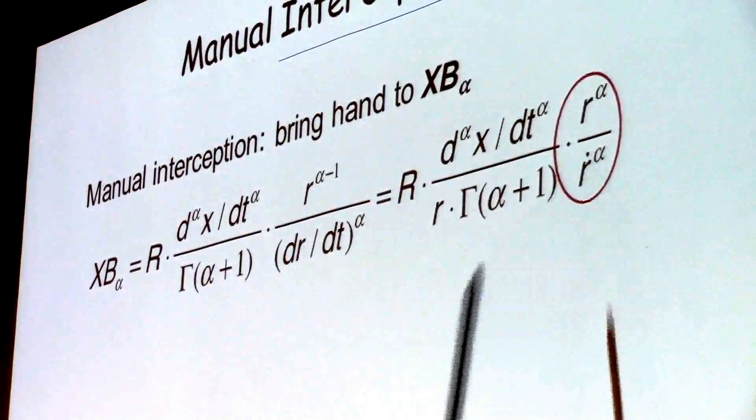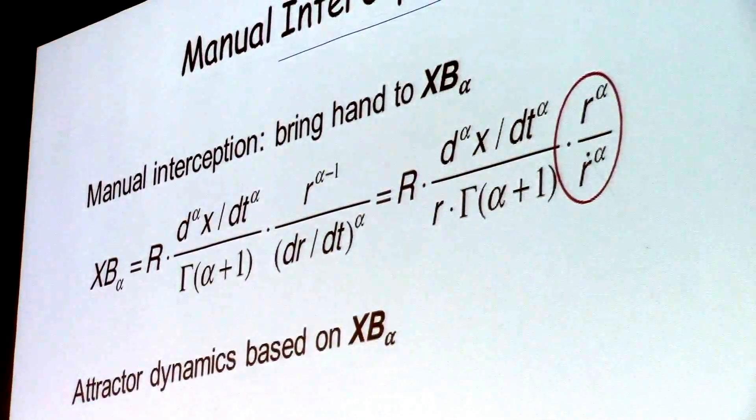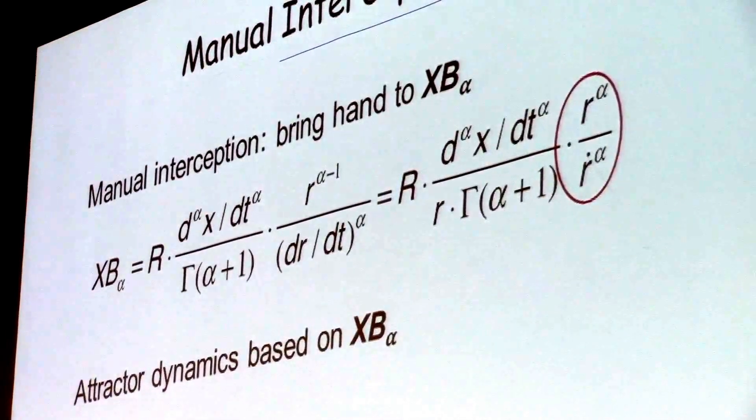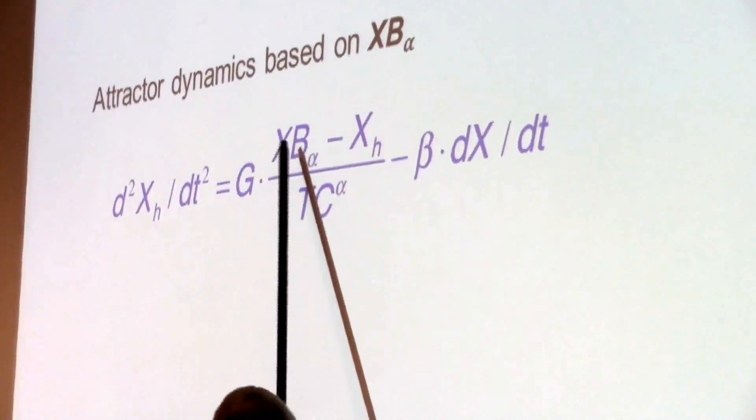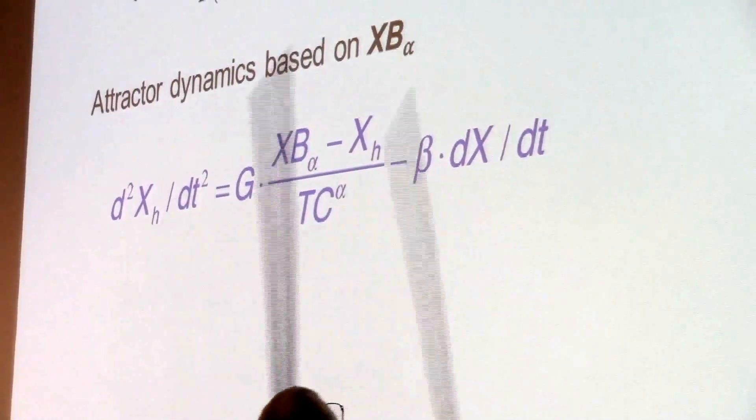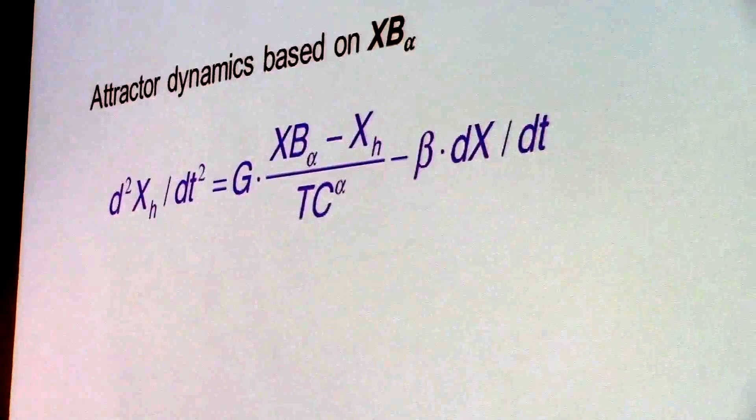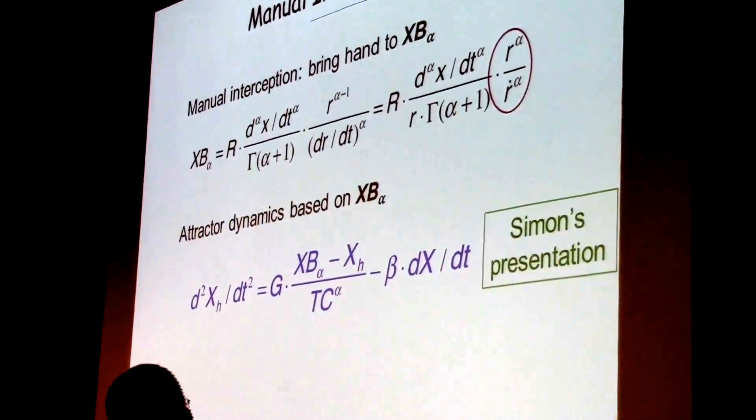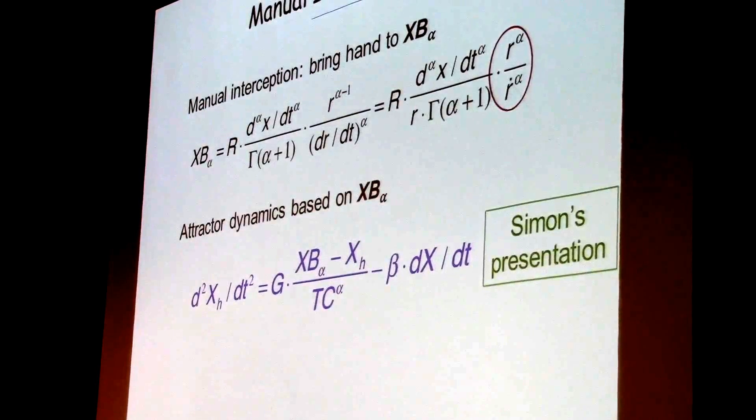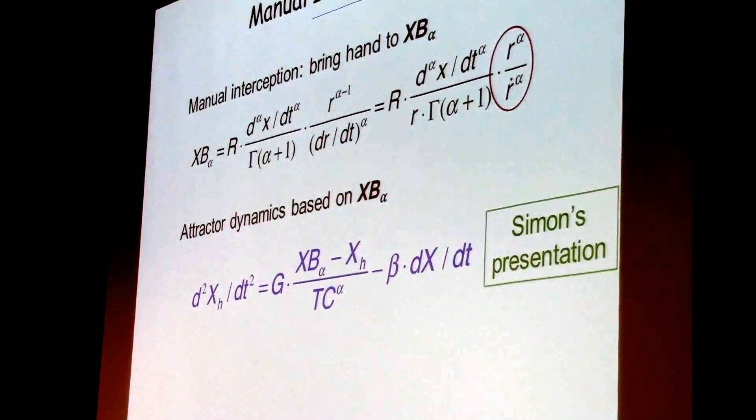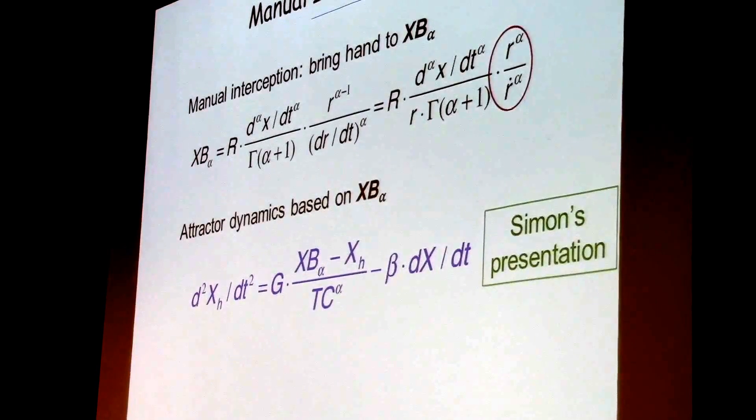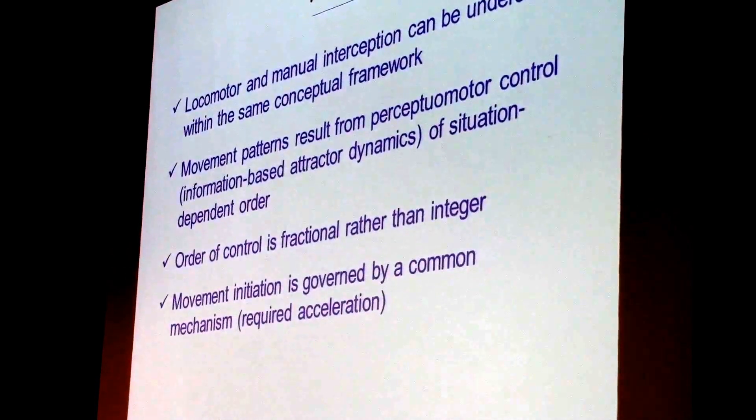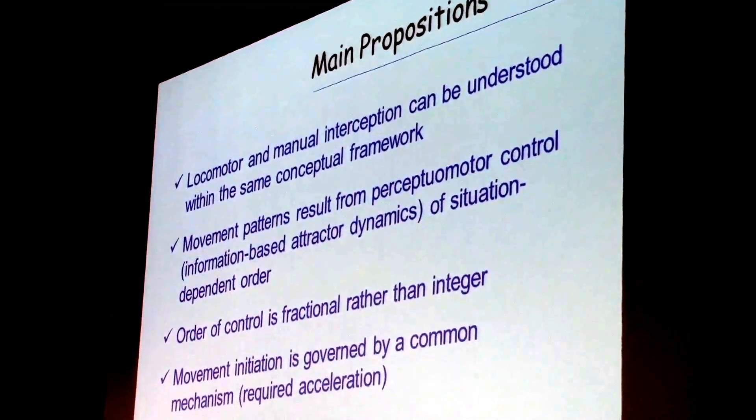Important to keep in mind. Tau to the power alpha. The attractive dynamics that you would have in manual interception based on an XB alpha. We don't know what alpha is, but it could be anything. You are going to have a hand acceleration that is based on a difference between where you want to be and where you are. Which you now have to scale to TC to the power alpha. This is where I went wrong in my required velocity model in 1997. The alpha was not there. Simon will present that part. Simon is finishing his thesis. And Simon is also looking for a job. You can talk to me if you want to know more about Simon.